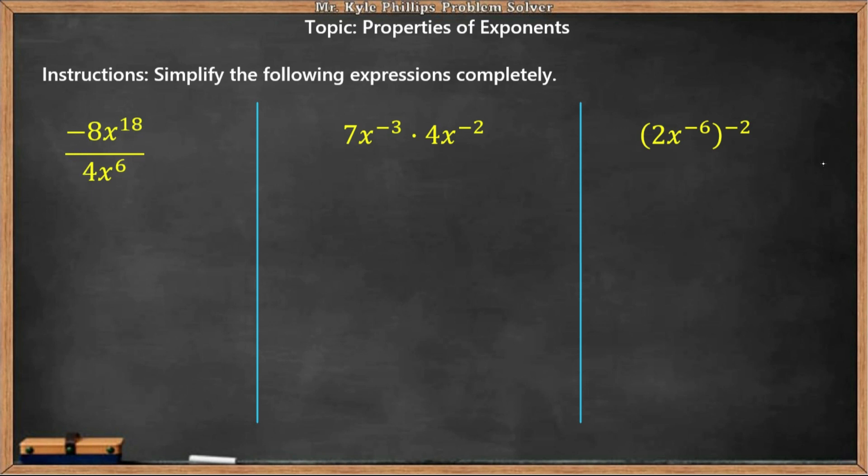We'll start with this first one over here. Now remember that anytime you're working with a fraction, we're going to divide the numbers and then with exponents we are going to subtract. So here we have -8 divided by 4, that's going to give us -2, and then we'll subtract our exponents here.